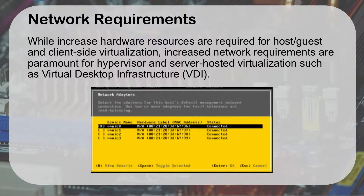Network requirements: as we increase our hardware resources for hosts, guests, and client-side virtualization, it also increases our network requirements. If I'm running four machines, they're going to use four times the amount of network resources if they're all going out to the internet. So you need a fast network card. You need a really fast network card if you're supporting virtual desktop infrastructure, because everything is happening over the network. We want to have at least gigabit ethernet for that.